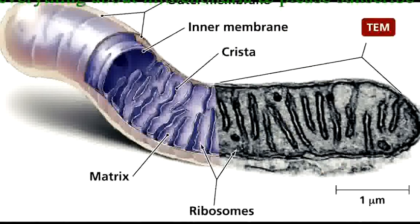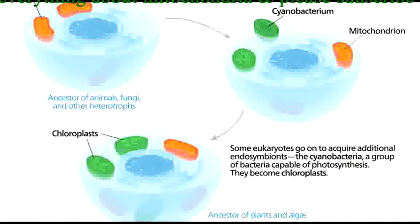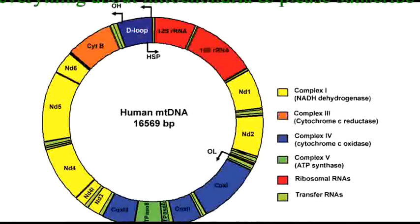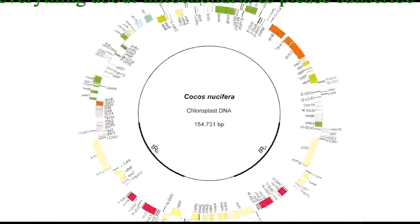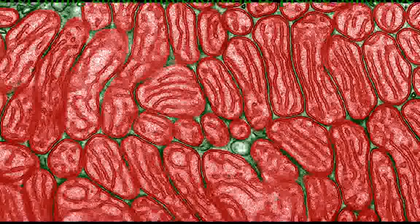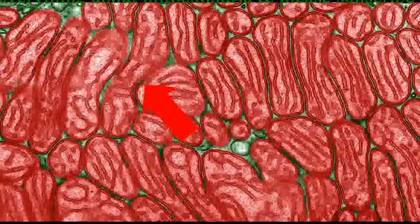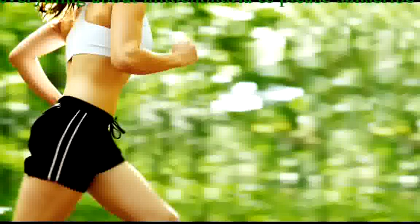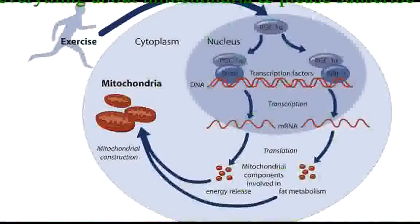There is significant evidence favoring the endosymbiotic theory. Although mitochondria and chloroplasts cannot survive outside the cell, they both contain their own DNA and synthesize their own proteins. In addition, they divide independently of the cell. This is why different cells in an organism can have different numbers of mitochondria or chloroplasts. For example, exercise causes the mitochondria in muscle cells to divide, increasing their number and their ability to provide the cell with ATP.